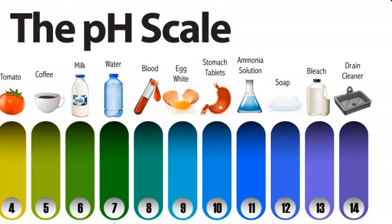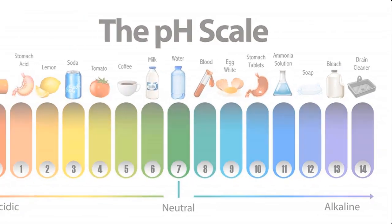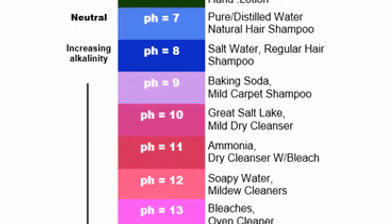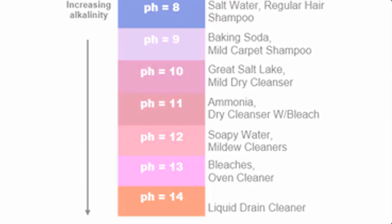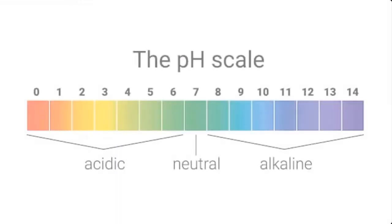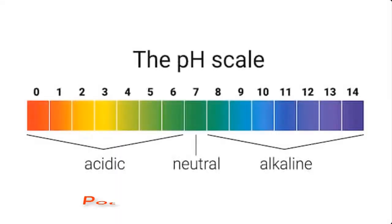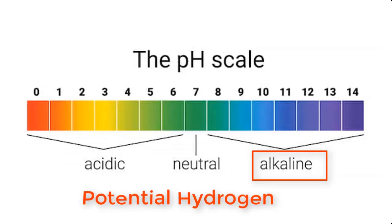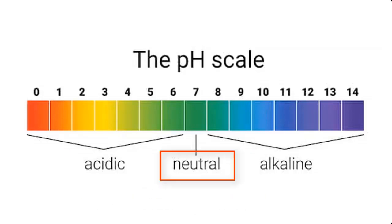Before we go into how to test the pH of your liquid soap or any other product, let's try to understand the basic chemistry of pH of a solution. pH, which literally means potential hydrogen, is a term used to describe the degree of acidity or alkalinity of a solution. A solution can either be acidic, alkaline, or neutral.